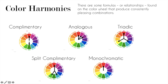Then we have split complementary. That's like taking a complementary color harmony, but instead of taking red and green, you split it on one side. So you have yellow-green or blue-green — and actually both. That's how we'd have that color harmony. These all rotate, so you can pick any combination: orange, blue-violet, and blue-green would be another split complementary color harmony.